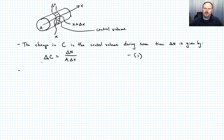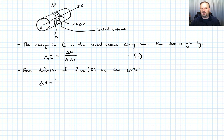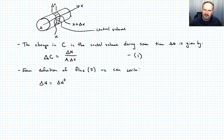From the definition of flux J, we can write delta N as follows. The change in the number of atoms must be the amount that flows across the boundary at x in the positive direction — delta N plus — minus the atoms flowing in from the x plus delta x boundary in the other direction — delta N minus.